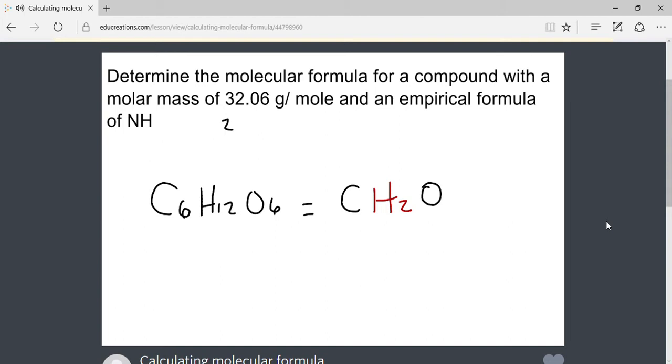By dividing each subscript by 6, we get the simplest reduced version, known as the empirical formula. Recognize that the empirical and molecular formulas are related by a whole number, in this case 6. The two formulas are simply related by a whole number.